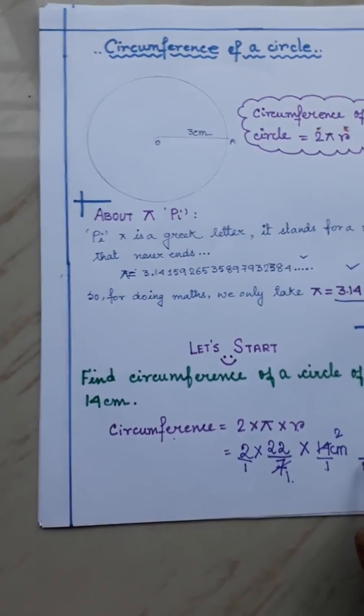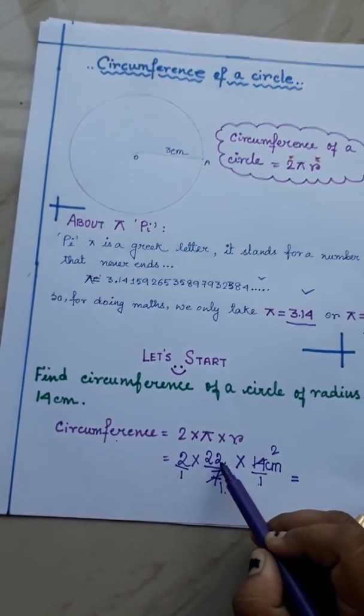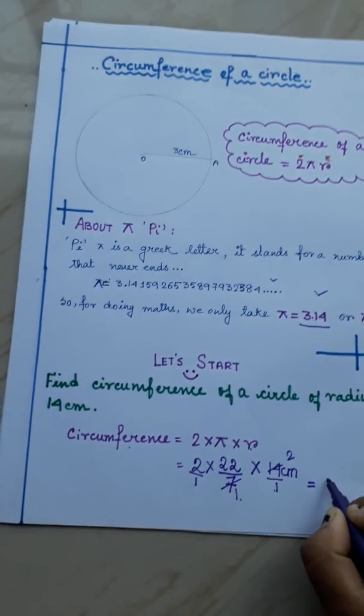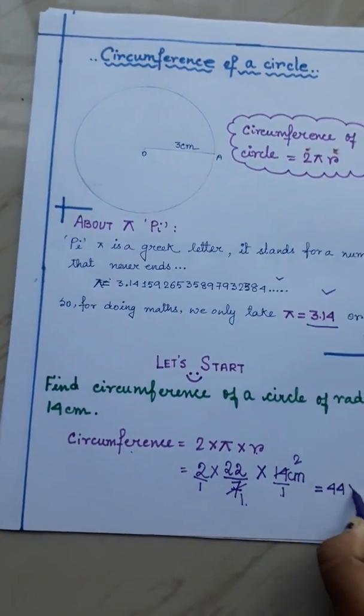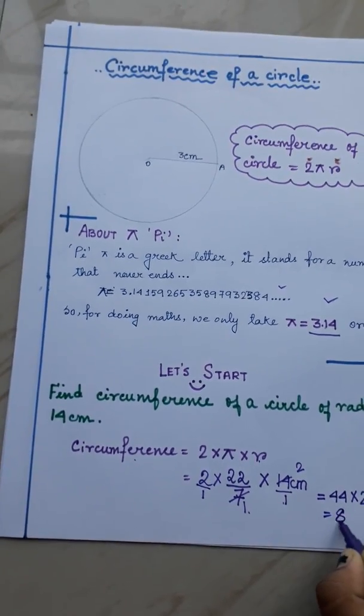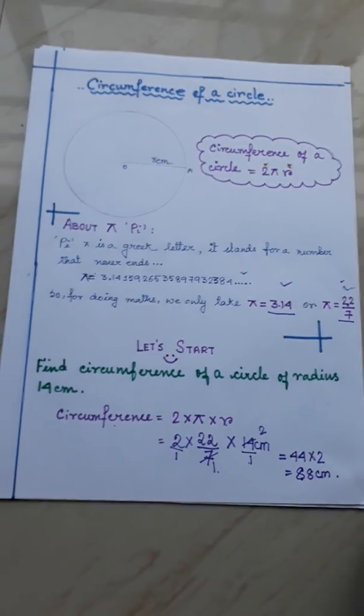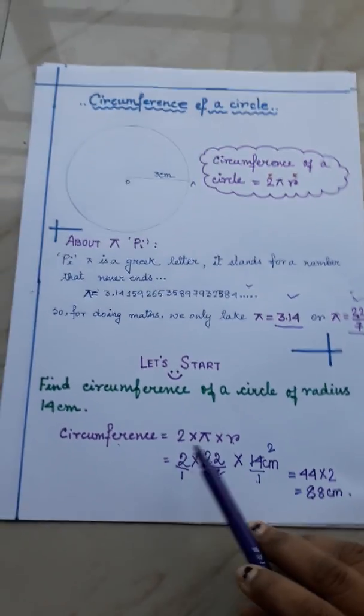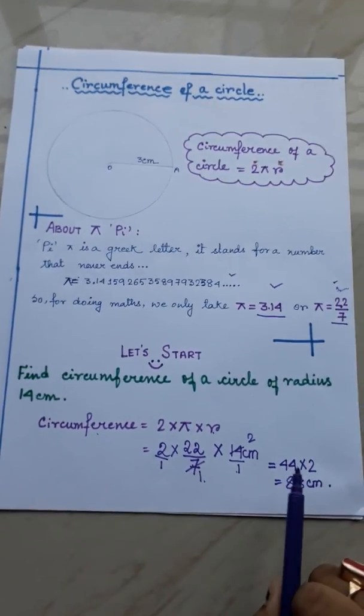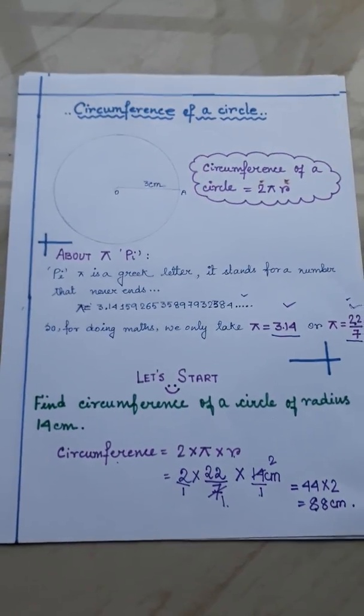That means we have to multiply the upper thing. That is 2 into 22 into 2. So, 2 into 22, that means 44 into 2, that means 88 cm. Here comes the answer of the first one. Circumference of a circle of radius 14 cm is 88 cm. Now, we will do sum number 2.